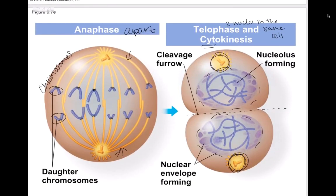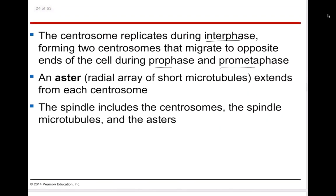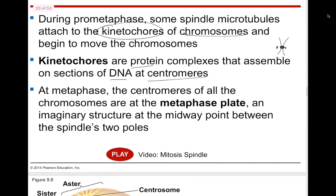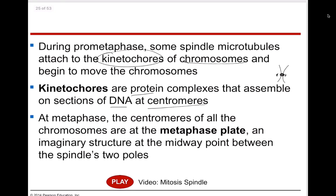Kinetochores are proteins that exist on the DNA at the centromeres. The sister chromatids are joined by centromeres, and on the outside are the kinetochore proteins — visible as little dots in the picture. The spindle attaches to these kinetochores to help separate the chromosomes. This is critical: if spindles attach correctly, the sister chromatids will be separated equally, resulting in genetically identical daughter cells. Incorrect attachment would result in unequal separation.